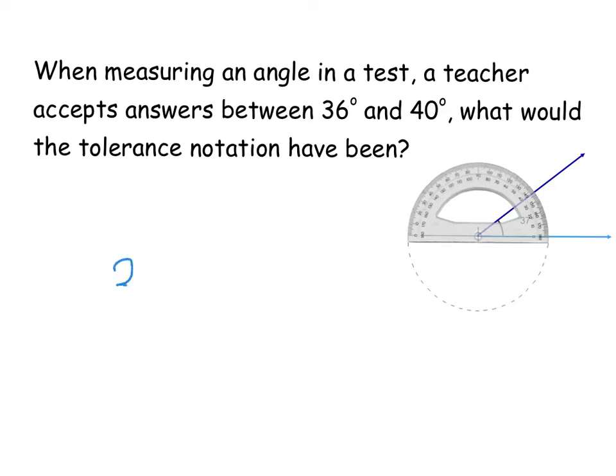So the angle we were actually probably asked to draw here was 38 degrees. And then you have to think, right, well, how far away are each of these two numbers from 38? Well, 36 is 2 below and 40 is 2 above. So there is the bit that you're adding on and taking away. So the actual answer was 38 plus and minus 2. So that would have been the tolerance notation given to the teacher in the marking scheme. And we probably had brackets around it and we probably had degrees.